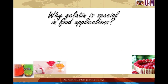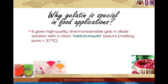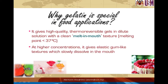Now let's talk about why gelatin is special in food applications. The most commonly utilized property of gelatin is its ability to form thermoreversible gels — meaning you can form a gel and then melt it again. At a few percent concentration in water, gelatin's melting temperature is below 35–37°C, which is below body temperature. This gives gelatin products a unique melt-in-mouth quality, leading to intensive flavor and aroma release. At higher concentrations, gelatin gives elastic, gum-like textures that slowly dissolve in the mouth. It is also an effective emulsifying and foaming agent.